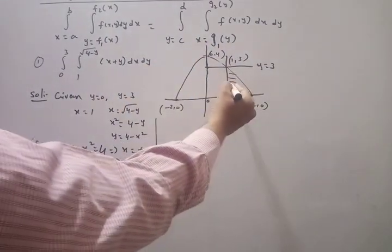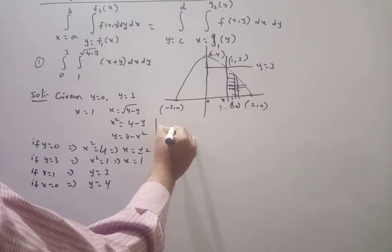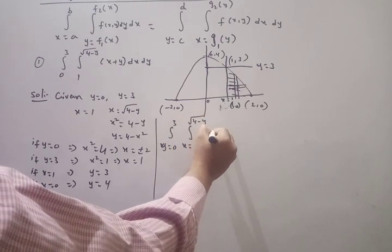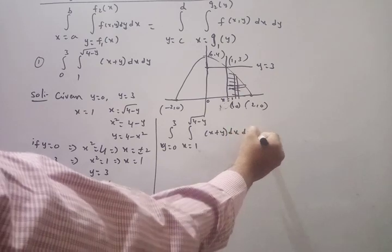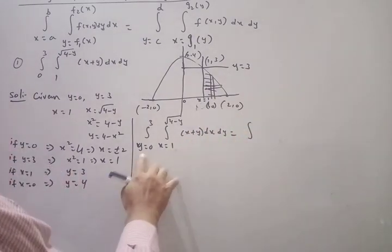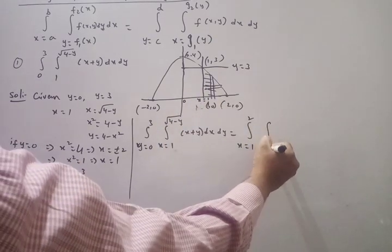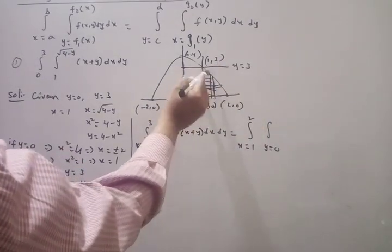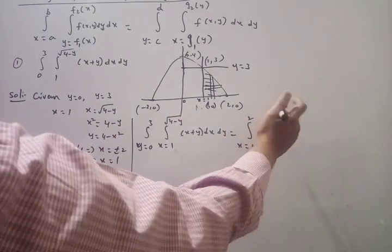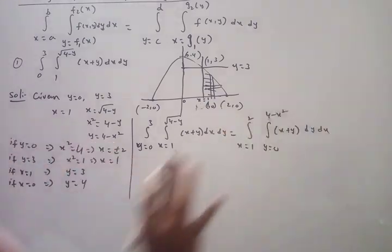Now to change the order: given is Y from 0 to 3 and X from 1 to √(4−Y) of (X+Y) dX dY. We change this so that X varies from 1 to 2, and Y goes from 0 to the curve Y = 4−X². Then substitute the function (X+Y) dY dX. It's very simple - you just find the new limits.